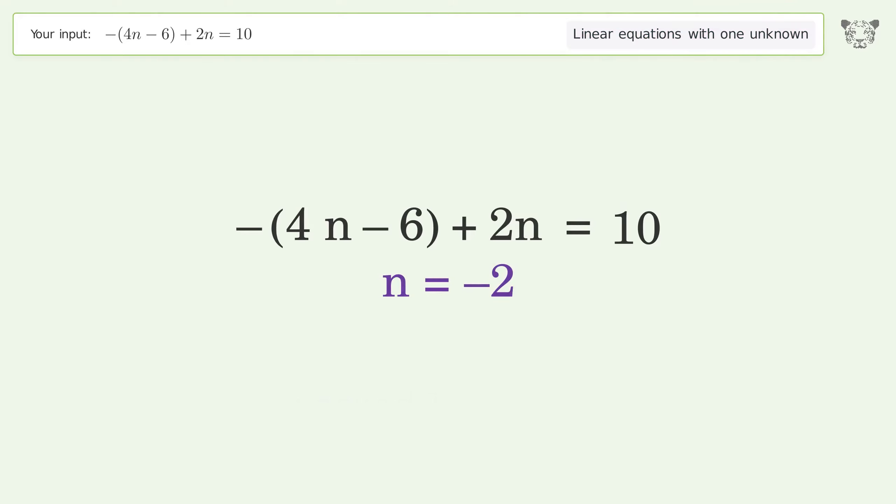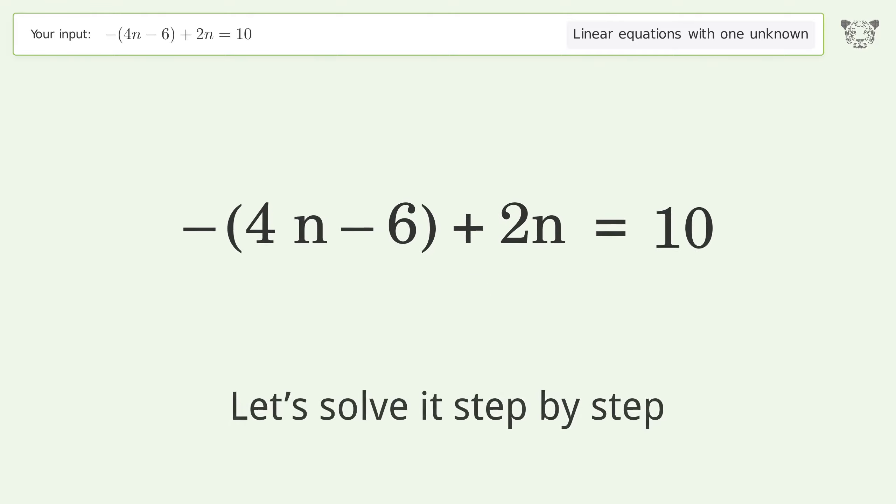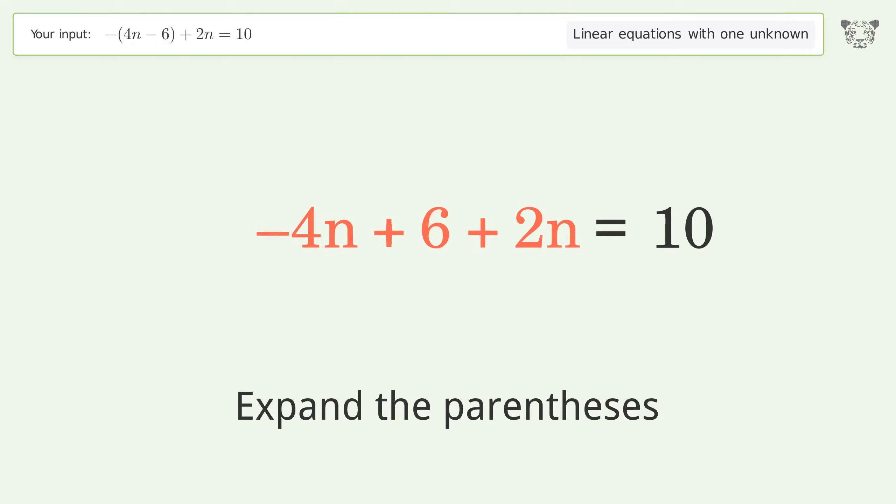You asked Tiger to solve this. This deals with linear equations with one unknown. The final result is n equals negative 2. Let's solve it step by step. Simplify the expression.